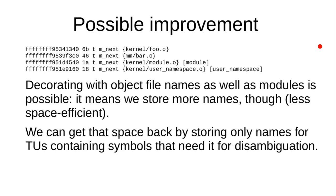If I add this information to the available filter functions with an option — off by default to avoid breaking existing parsing — then when you turn the option on, the output will include the object file name. That way I don't break anything existing.